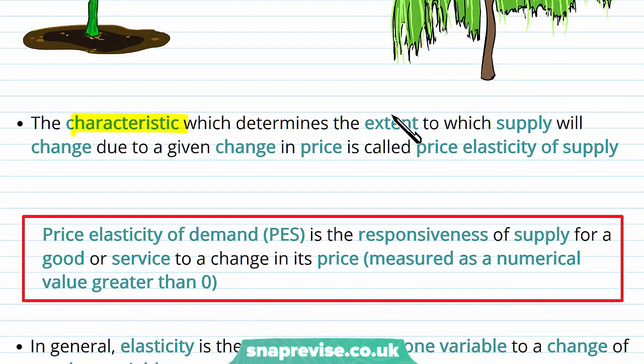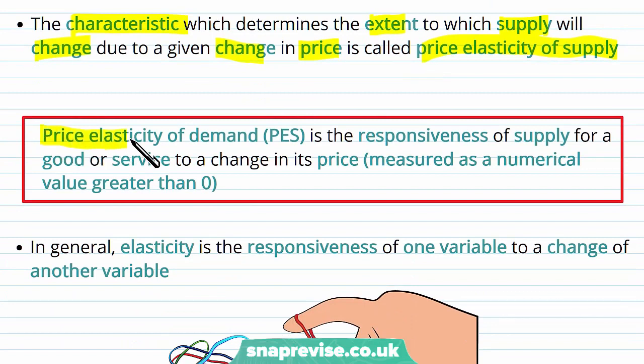And the characteristic which determines the extent to which supply will change due to a given change in price is called the price elasticity of supply. So the price elasticity of supply, otherwise known as PES.